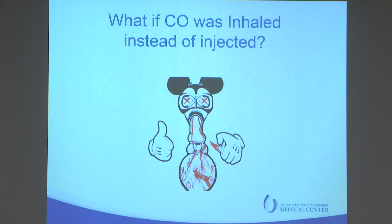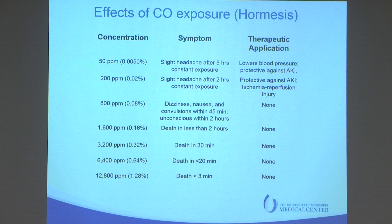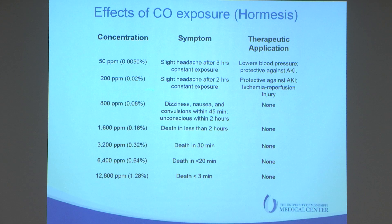Lastly, we tried to inhale carbon monoxide instead of injecting it, and this is really the hormesis effect of CO. Very low concentrations — 50 parts per million — have been shown in the literature to lower blood pressure and be protective against acute kidney injury. At around 200 parts per million, you get a slight headache, but it's also been shown protective against acute kidney injury and ischemia-reperfusion injury of the gut and liver. At higher levels, death occurs. So there really is a hormesis effect of CO exposure.